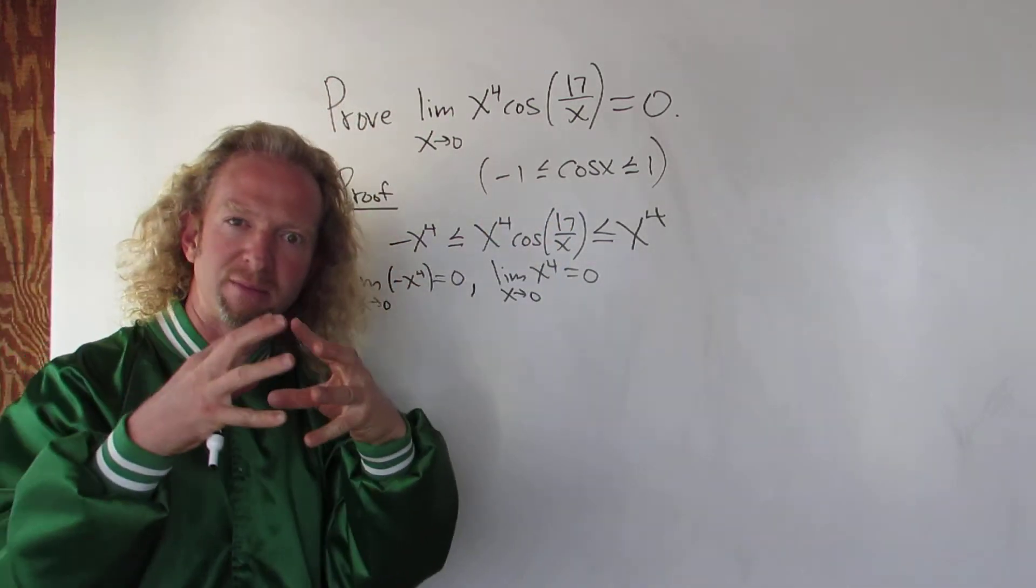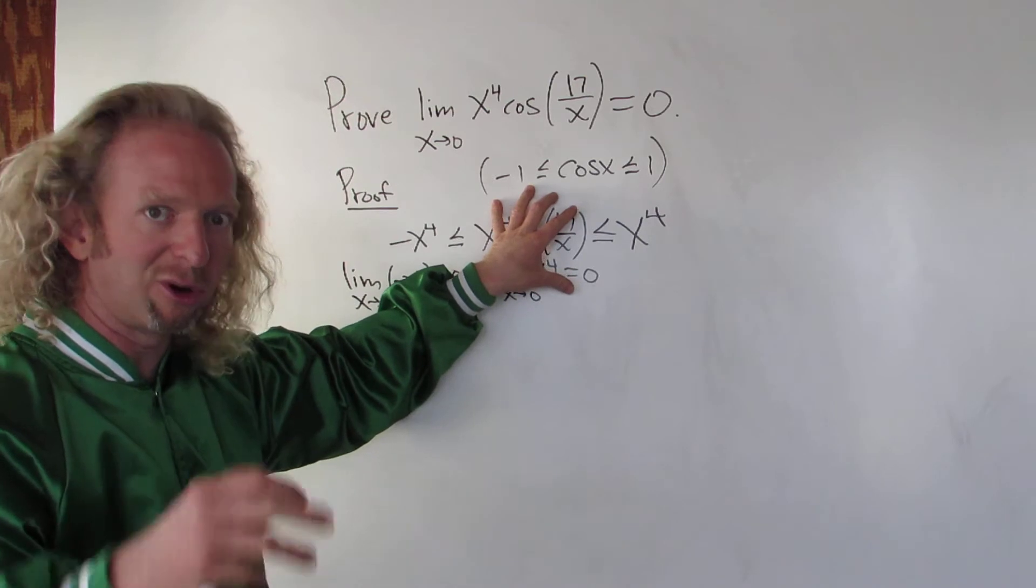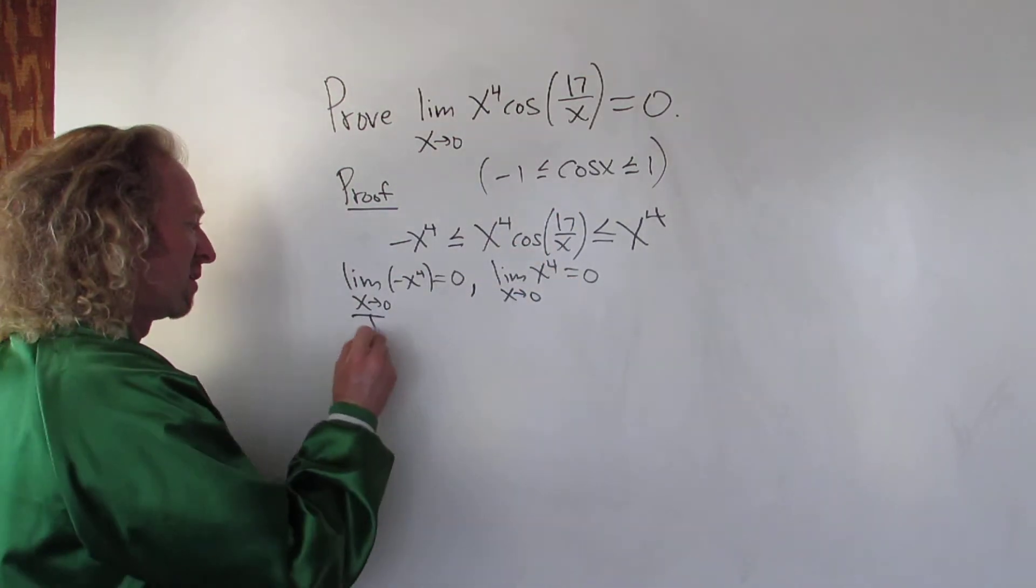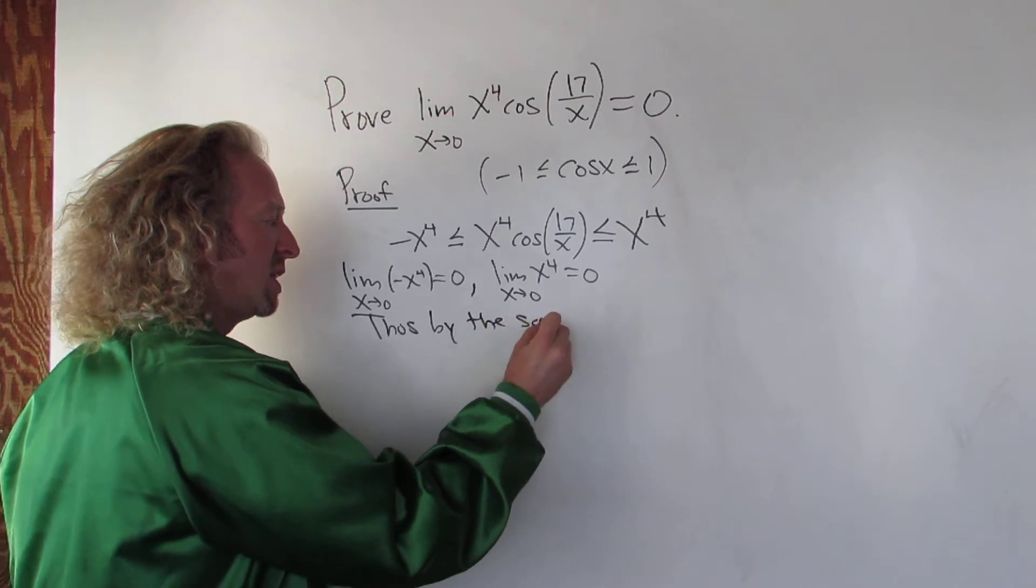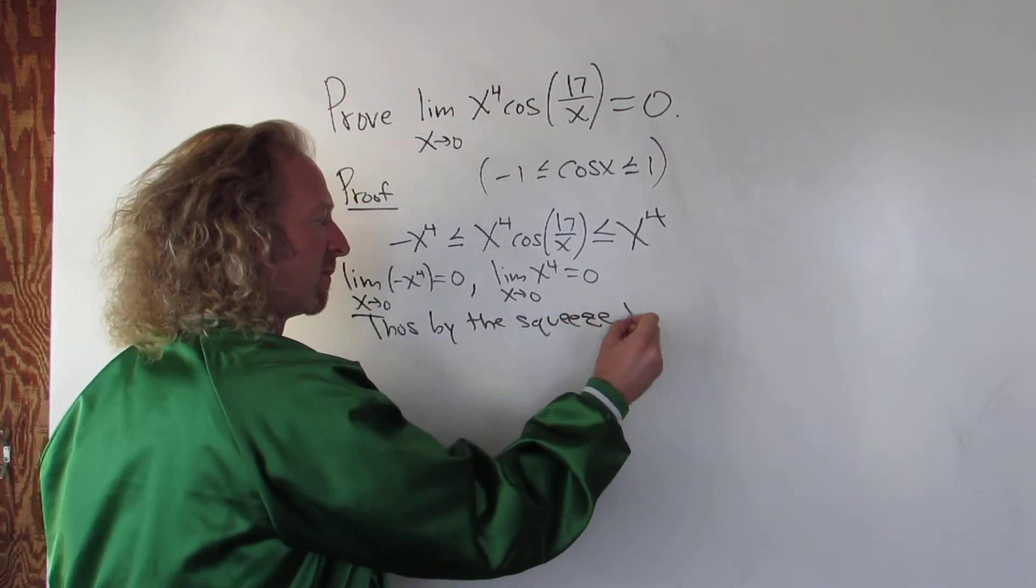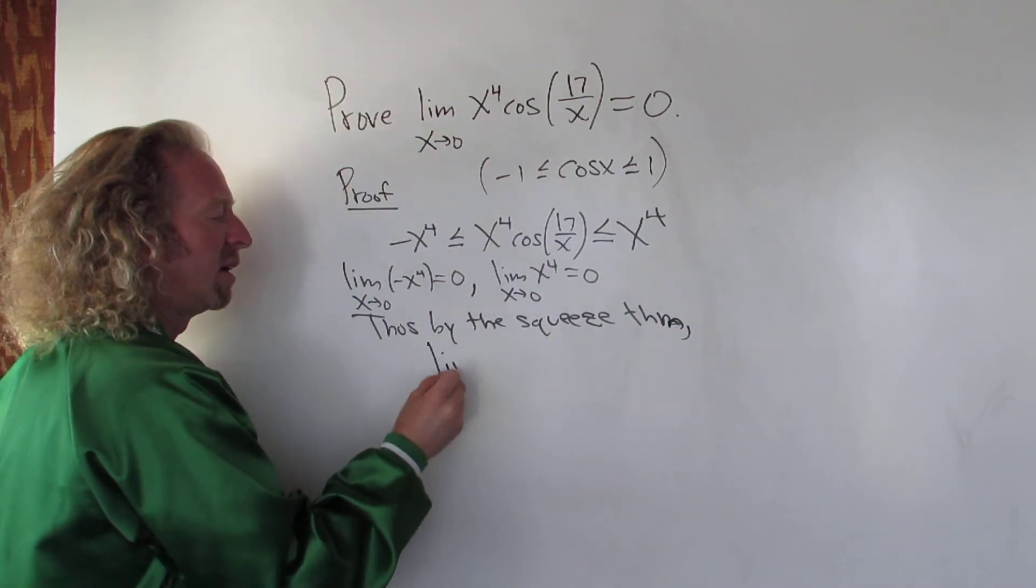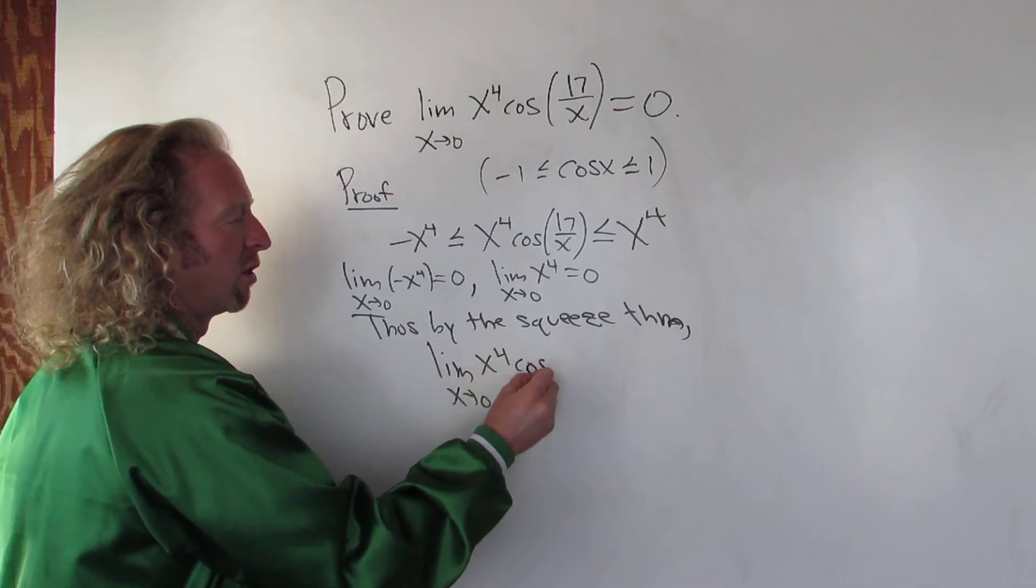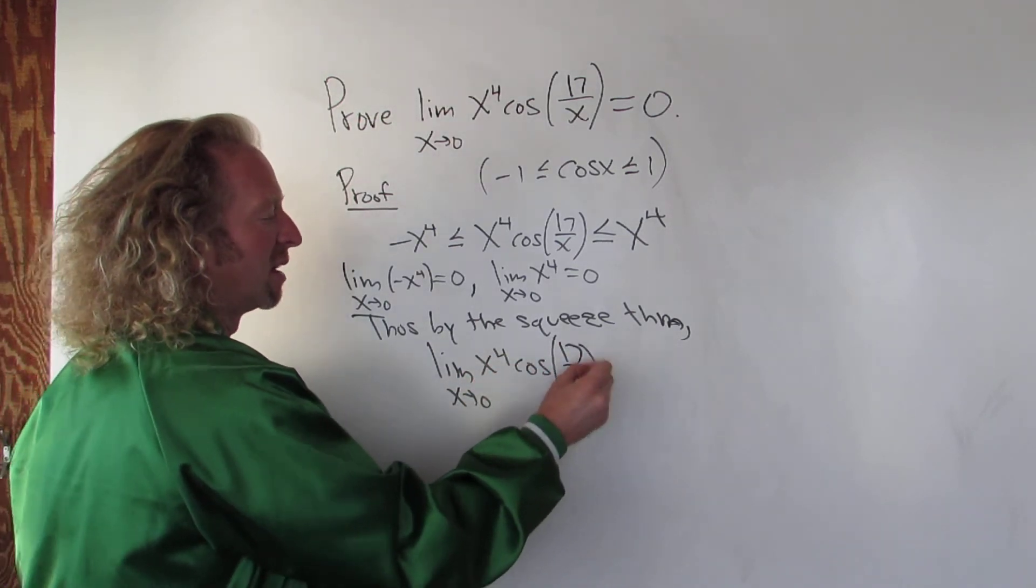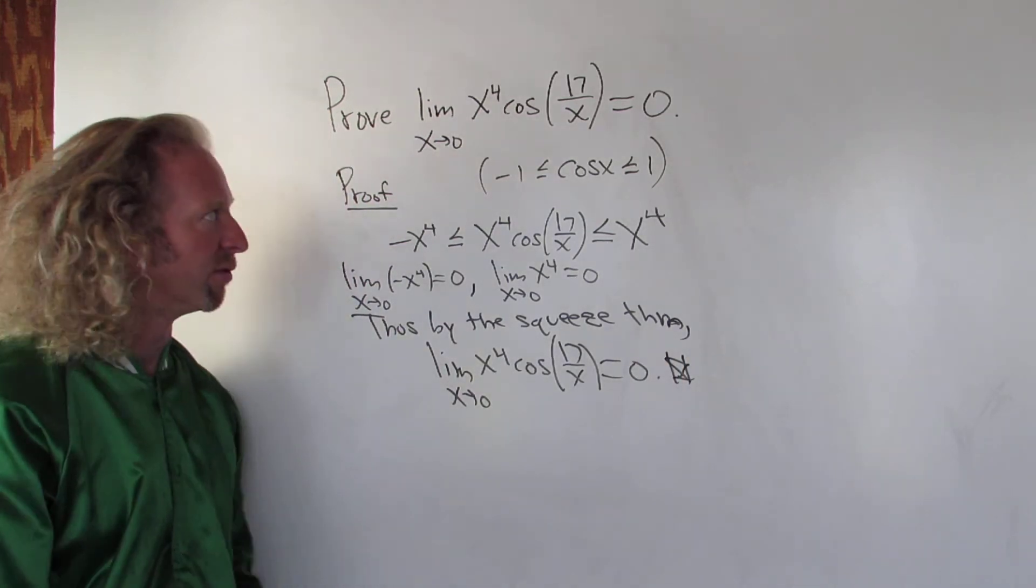Therefore by the squeeze theorem, the limit of this function as x approaches 0 is also 0. So thus, by the squeeze theorem, our original limit is 0. I'll go ahead and write it again. The limit as x approaches 0 of x to the 4th cosine 17 over x is also equal to 0. And that concludes the theorem. I hope that helps.